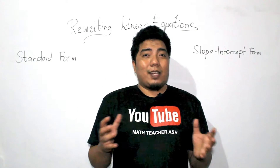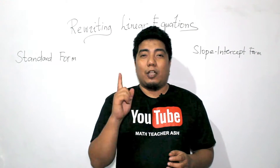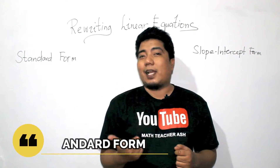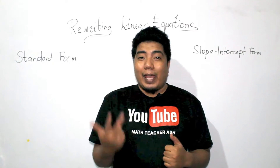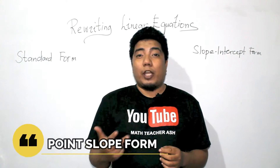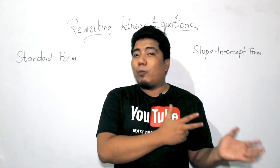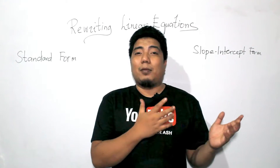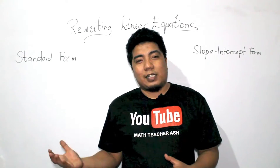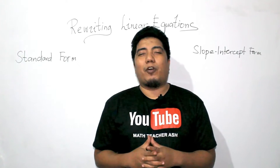Remember that linear equations have three different forms. The first is the standard form, the second is the slope-intercept form, and the third is the point-slope form. However, the point-slope form is seldom used, and the commonly used forms are the standard and the slope-intercept form.